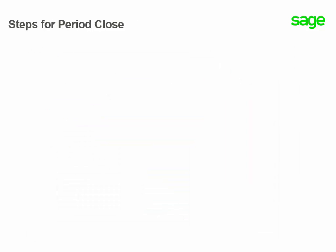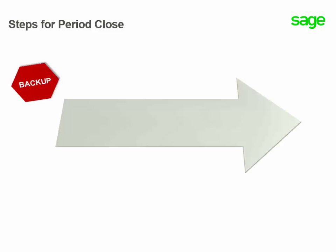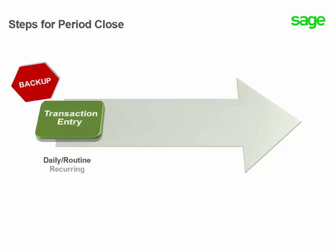There are several prerequisites prior to closing a period. First, you always want to back up your data. You want to enter all transactions related to the period, including the daily routine transactions like invoices, payments, and receipts. Also, recurring and calculated journal entries, as well as accruals, and any reconciliations including bank, matching, and adjustments. You also make decisions to convert simulated journal entries to actuals to include in that period, and your reversals.